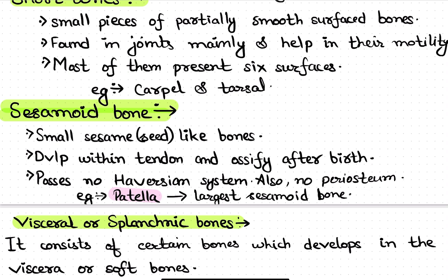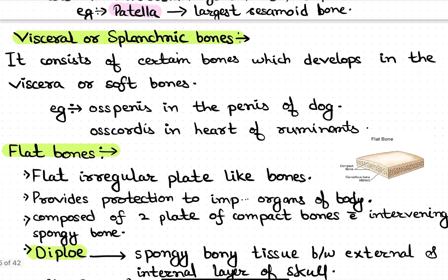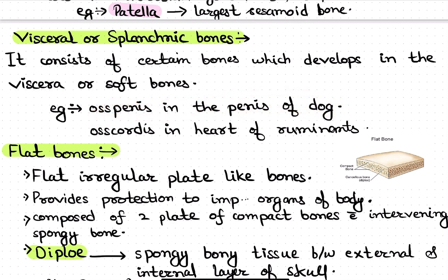Periosteum is a layer of fibrous tissue around compact bone which is non-articular. Visceral bones, also known as splenic bones, develop in viscera or soft tissues. For example, the os penis is a bone present in the penis of the dog, and the os cordis is found in the heart of ruminants.